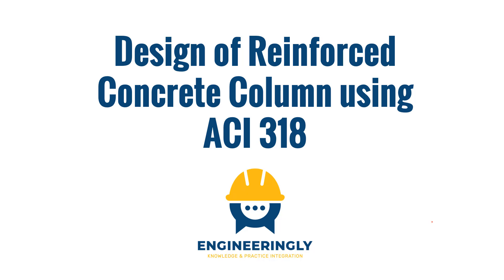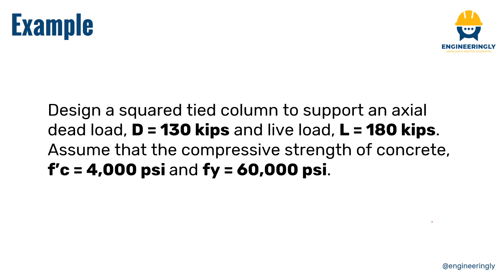Hello and welcome back. In today's video you're going to learn the design of reinforced concrete columns using ACI 318. In this example we will design a column with a square cross-section. It is given to design a square tied column to support an actual dead load of 130 kilopounds and a live load of 180 kilopounds. The compressive strength of concrete is 4,000 psi and the yield strength of steel is 60,000 psi. Let's jump right in and go through the step-by-step process.